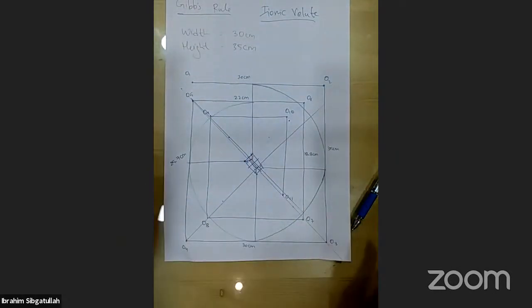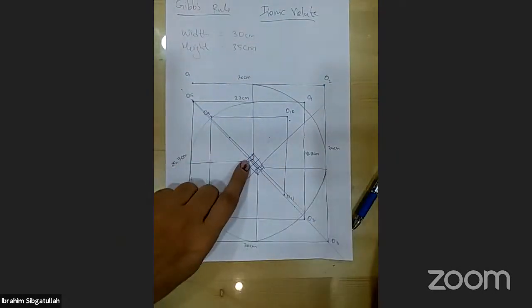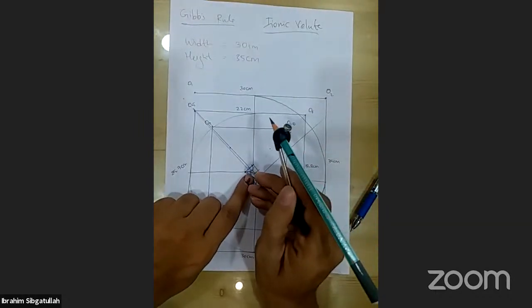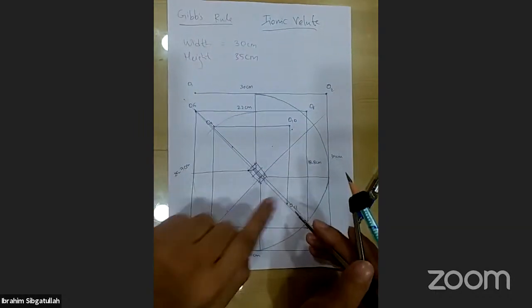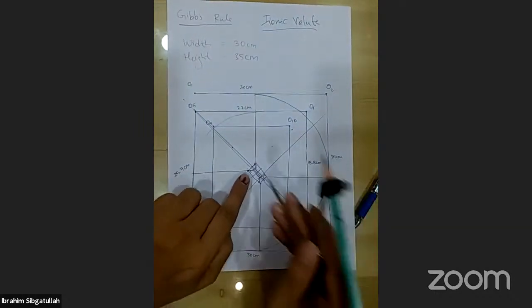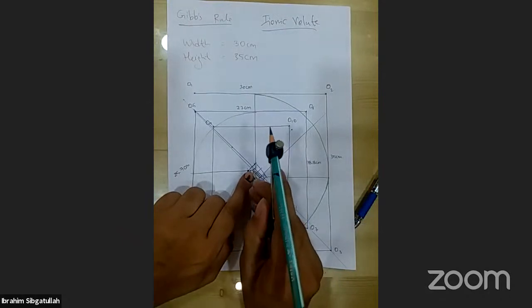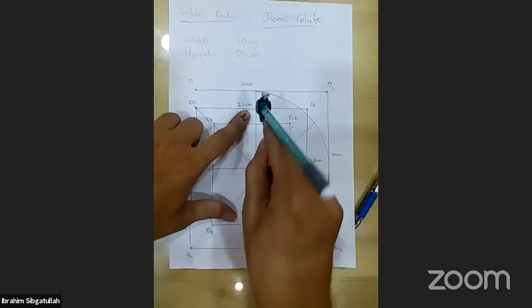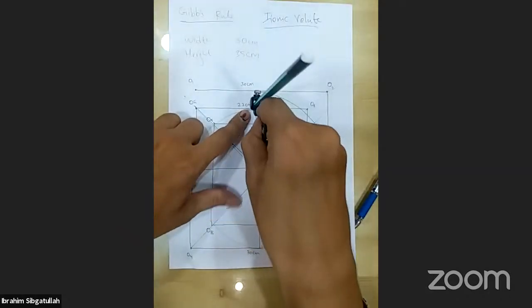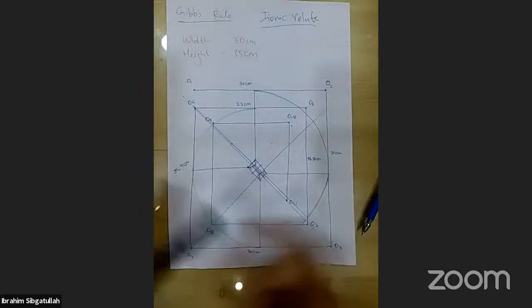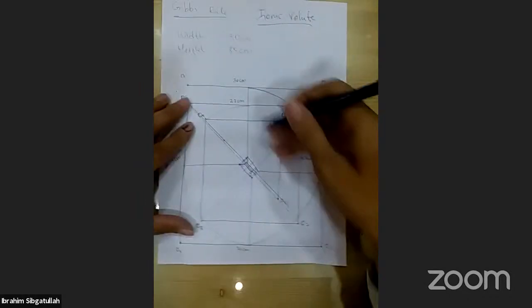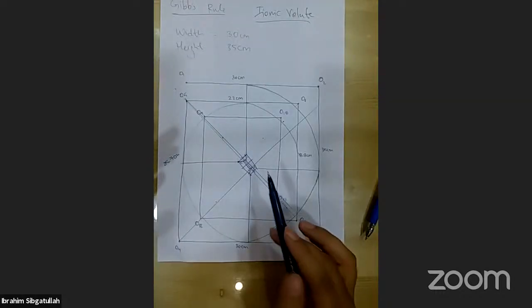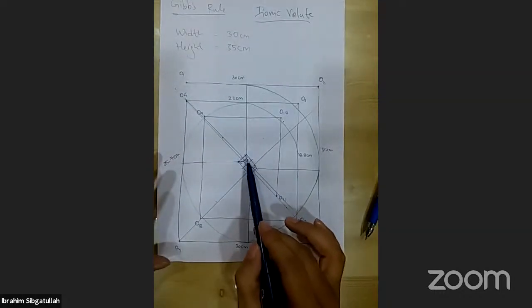Then from E, take the arc; from F, continue; from G, continue. The same process should be repeated at F, G, and H.